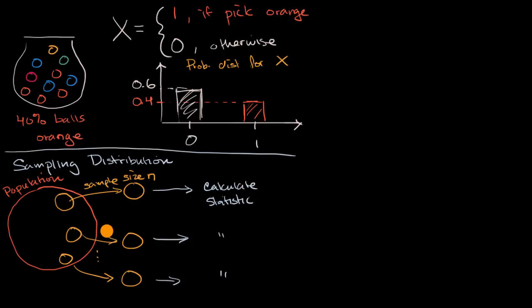And let's say we were to do this an infinite number of times. And we were to plot the distribution of the statistic that we're calculating. Well then we have our sampling distribution. Let's try to make this a little bit more tangible by going back to our colored balls example.